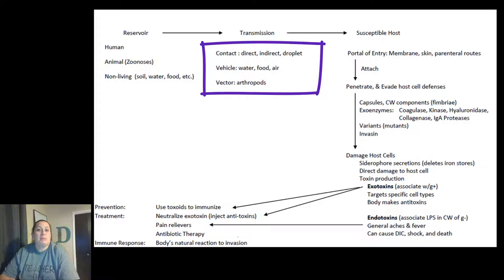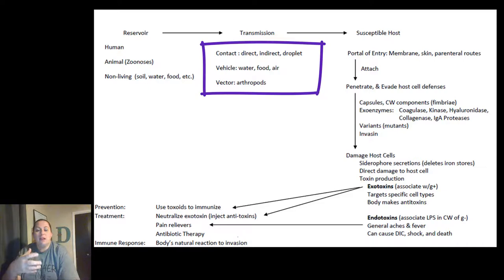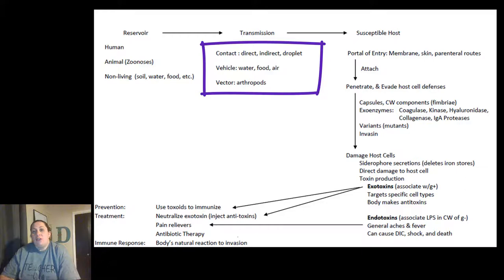Transmission can be direct, like person to person. It could be indirect — for example, sneezing on your hand, touching a doorknob, and someone else touches it. That's through what we call fomites. Or it could be through droplets — sneezing into the air and someone breathes them in. Vehicles include contaminated water or food, like with food poisoning, or even the air. Vectors are things that can transport infection, like arthropods — mosquitoes or ticks.